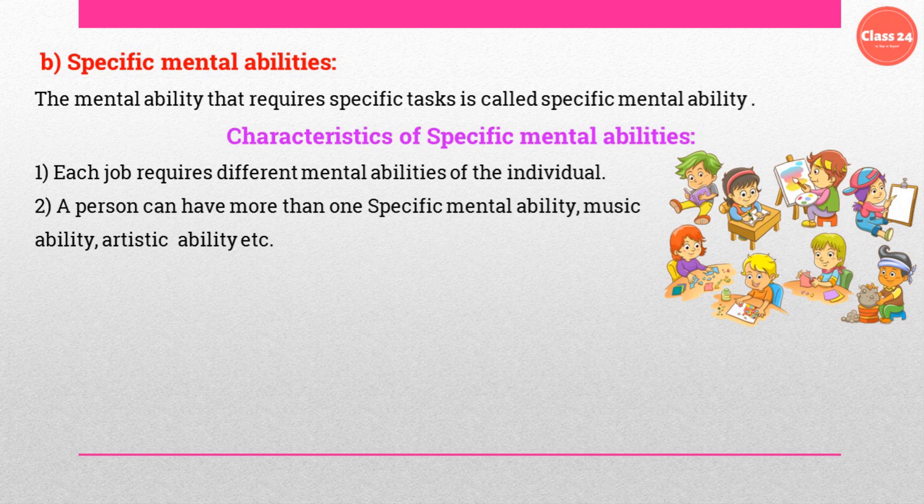A person can have more than one specific mental ability — for example, one person can have music ability, artistic ability, pottery ability, or speaking abilities. These abilities can vary from person to person, and they can be practiced and developed.